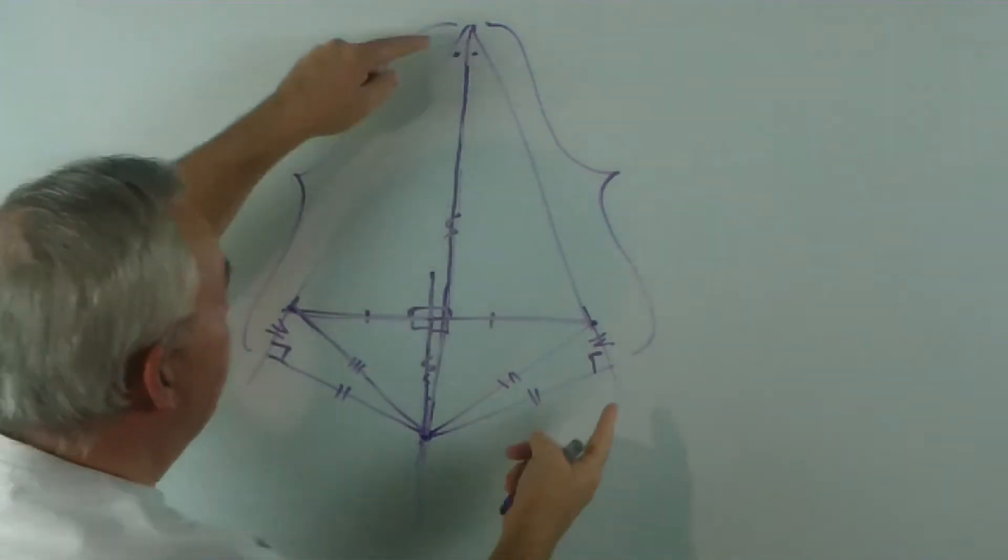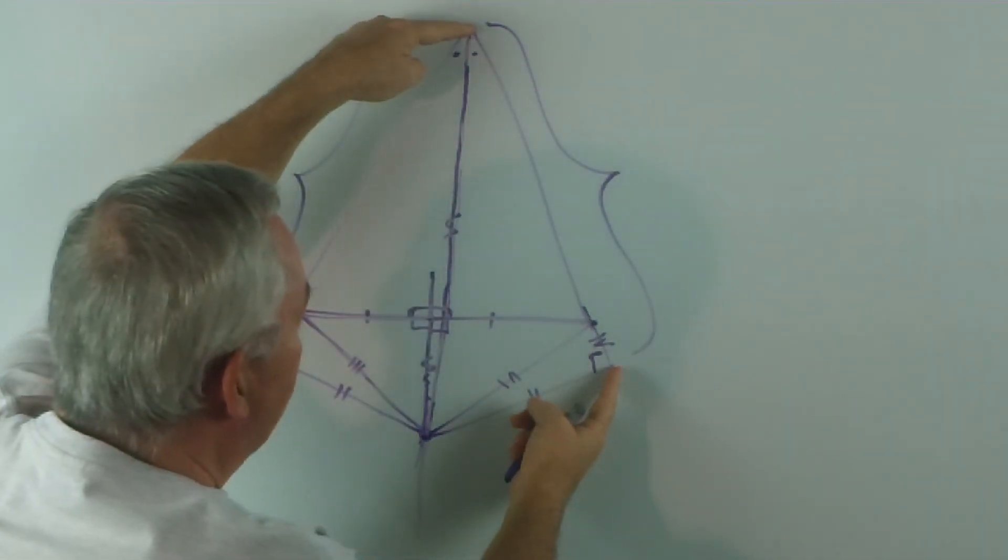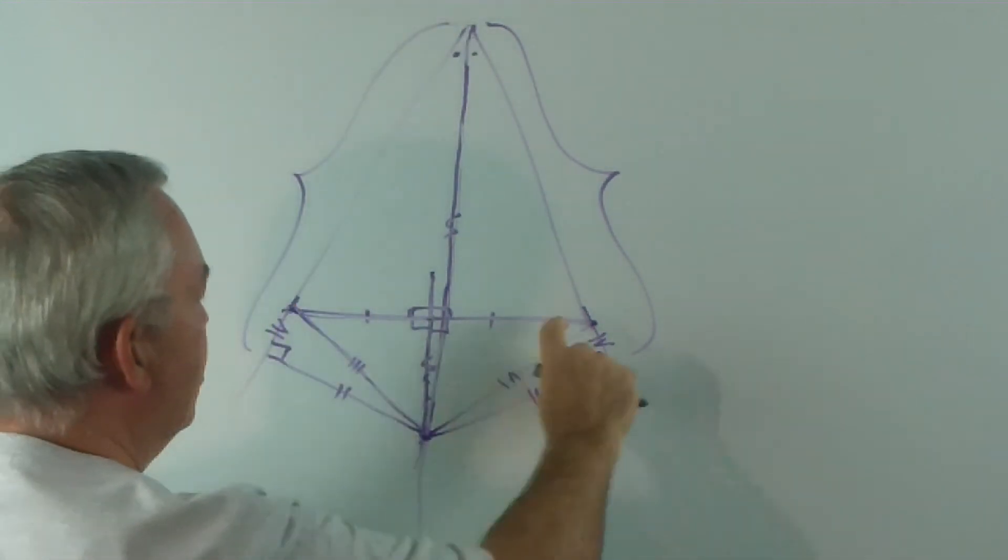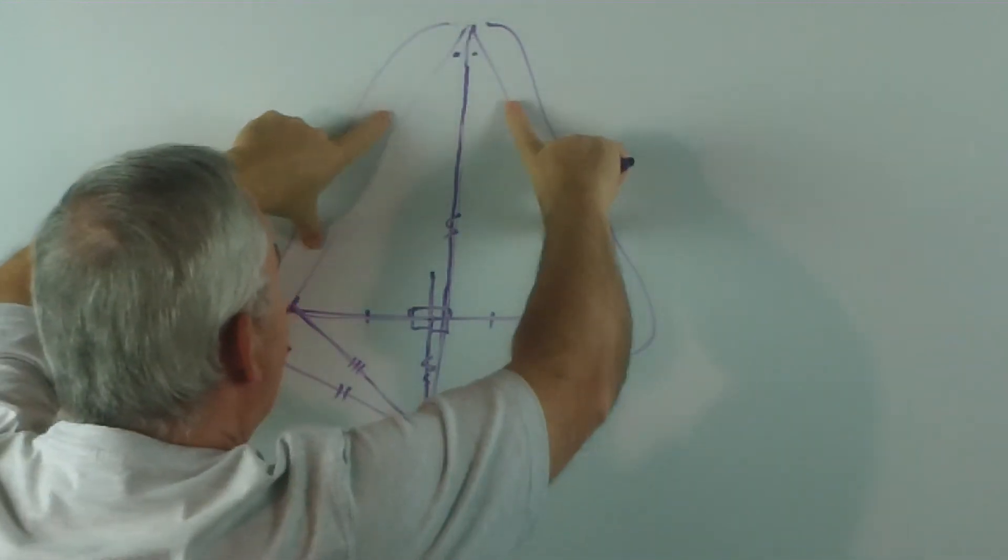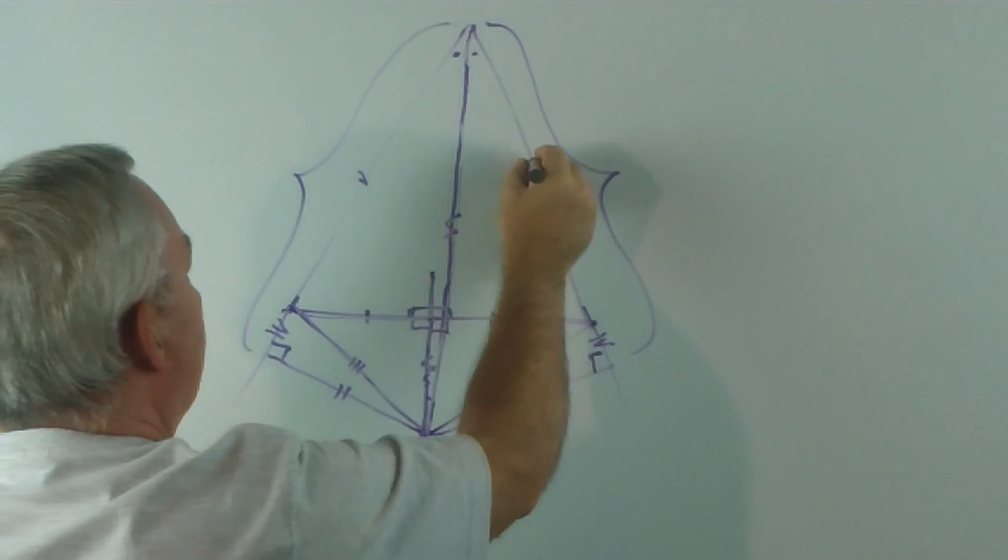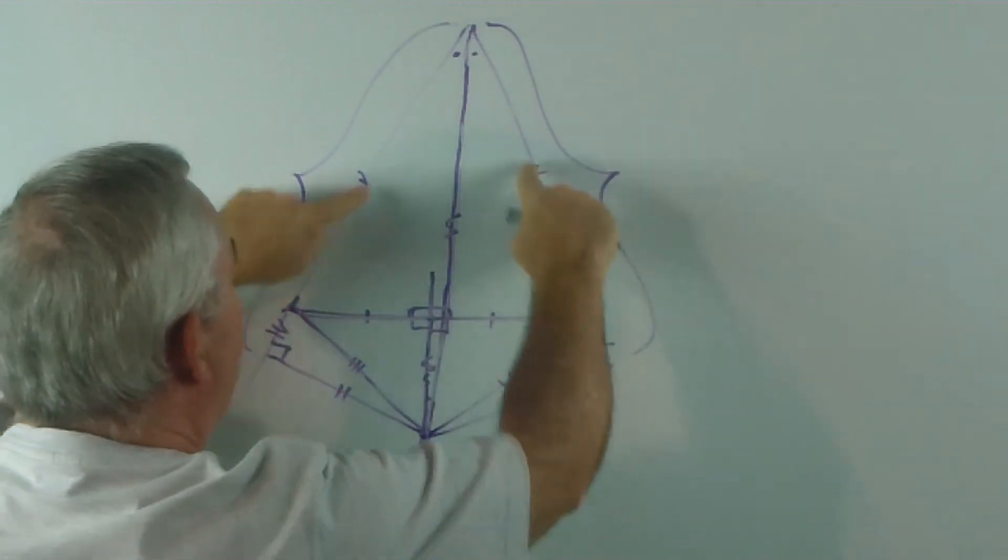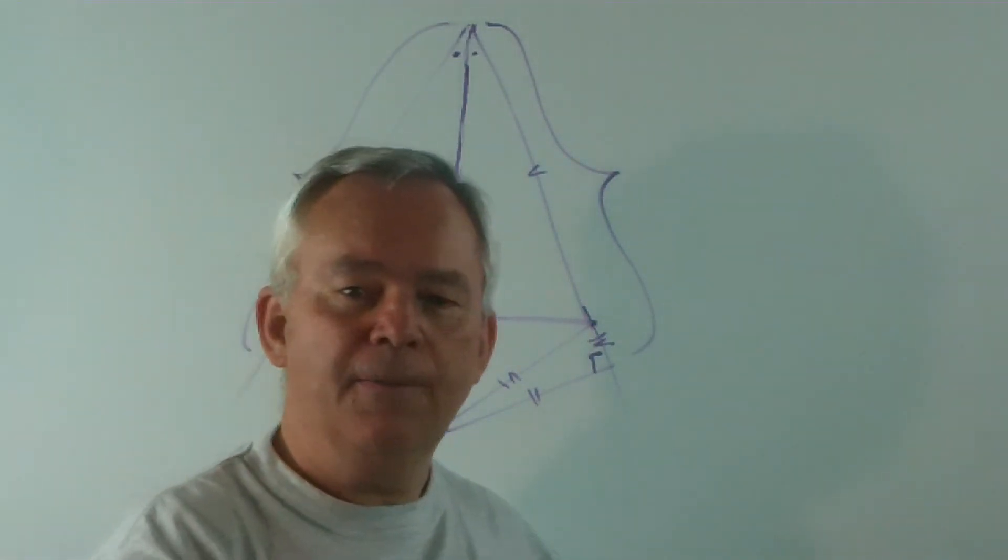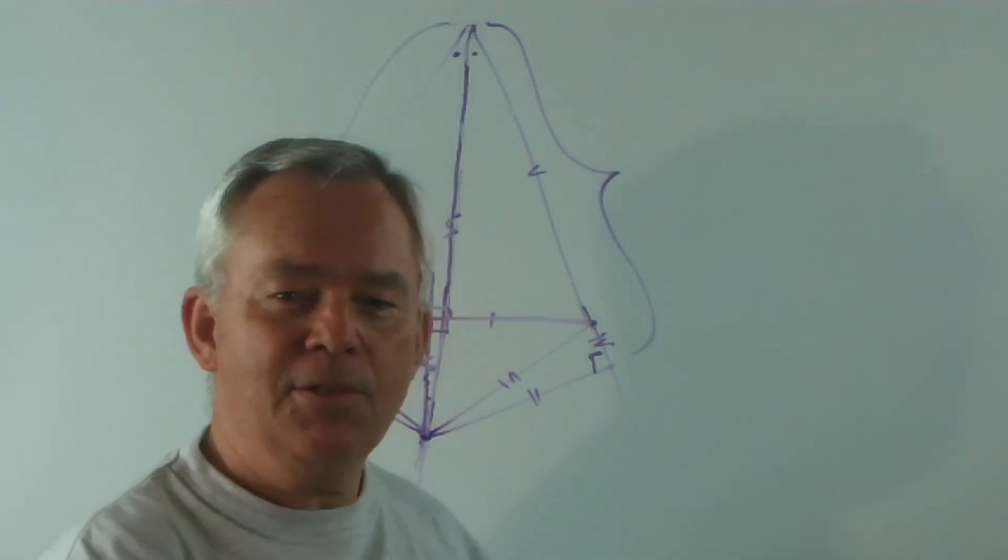But we've got a problem again. If this length matches that length, and if this bit matches this bit, then the differences also match. And, again, we've proven that we have our original triangle as isosceles. Every triangle is isosceles!